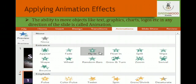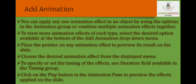You can add animation by using sound effects and visual effects that include movements. Select the Animation tab to apply any one animation effect to an object using options in the Animation group, or combine multiple animation effects together. To view more additional effects of each type, select the desired option available at the bottom of the Add Animation drop-down menu.